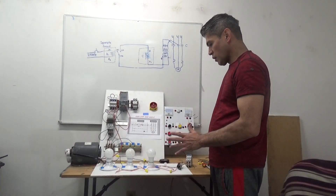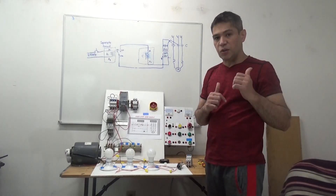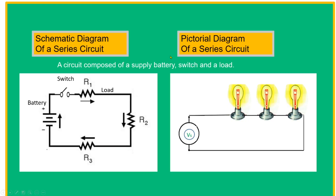Now we're going to discuss on the computer the schematic diagram of a series circuit and the pictorial diagram of a series circuit. A circuit is composed of a supply battery, a switch, and a load. This is our circuit and this is our supply battery. We have a switch and we have a load.